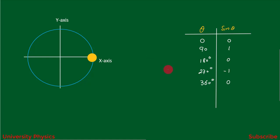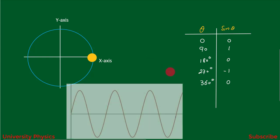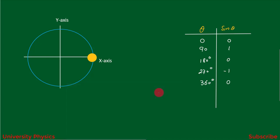If we draw this motion graphically, we get a sinusoidal wave. So periodic motions are those which repeat themselves after equal intervals of time, and sine θ and cosine θ are called harmonic functions.